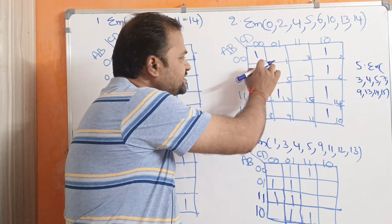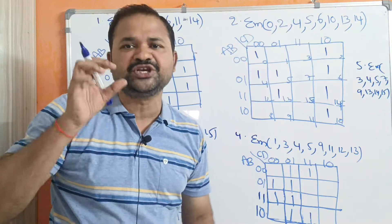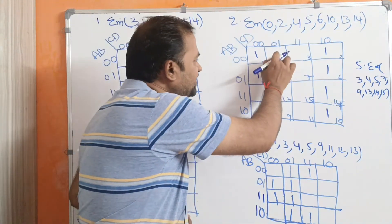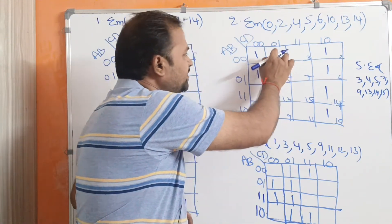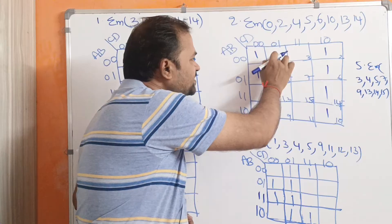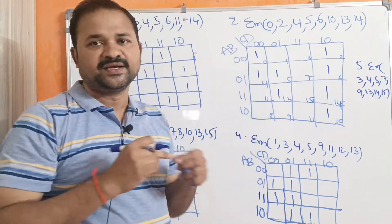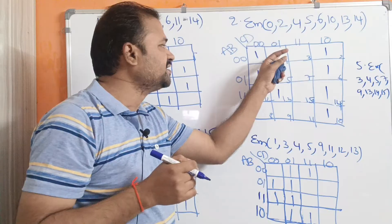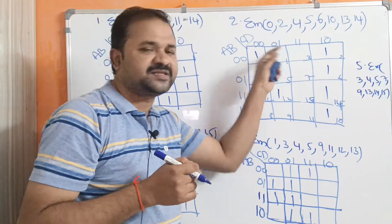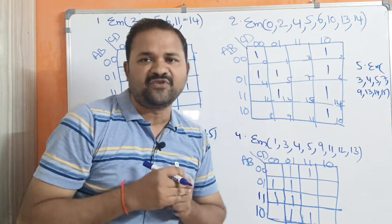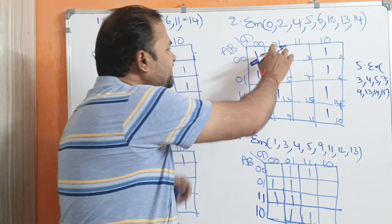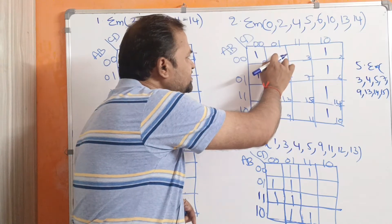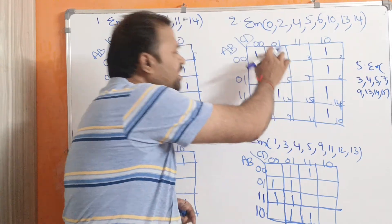So this is nothing but M0, the 0th minterm. Likewise, if we observe this cell, it represents 0,0,0,1. In decimal notation 0,0,0,1 is 1, so this cell represents the M1 minterm, which we can also write as A̅B̅C̅D.